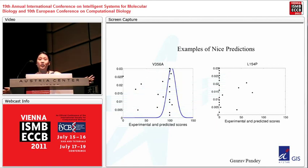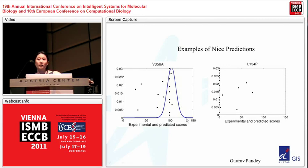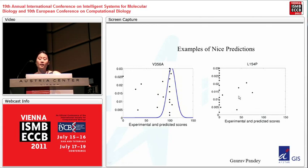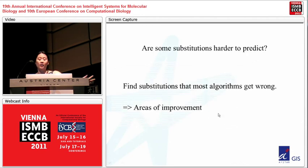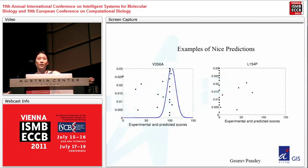These are examples of nice predictions. On the left-hand side is a valine to alanine substitution at position 356; the experimental data shown in blue shows 100% activity, and the black dots representing predictions by submitters are around 100 — most predicted this substitution to be functionally neutral. On the right-hand side is a deleterious substitution from leucine to proline at position 154 with zero activity, and most submitters correctly predicted zero activity.